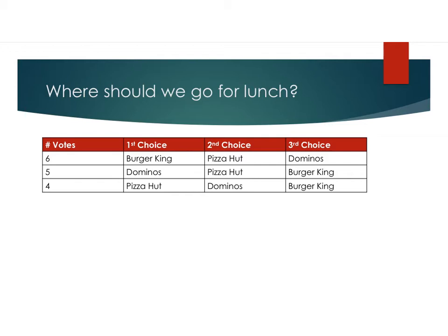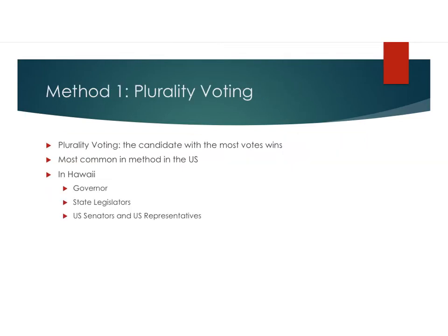So given this, how do we determine where we're going to go for lunch? Today I'll walk us through three different methods of voting. The first system of voting is called plurality voting, which is where the candidate with the most votes wins. In the U.S., this is the most common voting system.